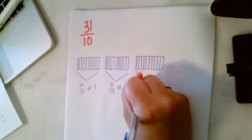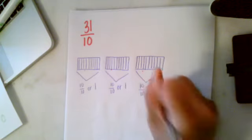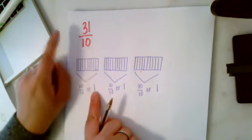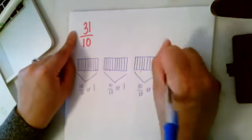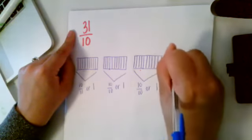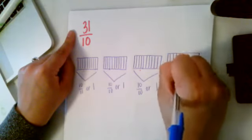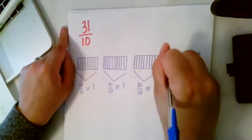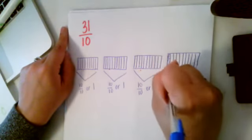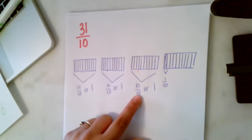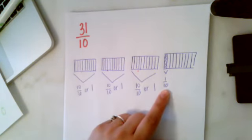So now we got 10, 20, 30. I have 30 tenths here, but I need 31, which means I'm going to draw another one, but I'm only going to shade in one tenth. So here is one tenth.